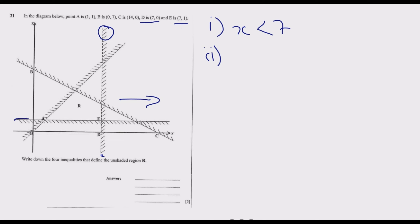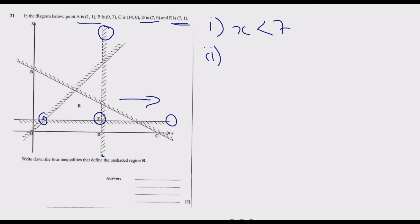The second inequality comes from the horizontal line through A and E. At A, Y is 1 and X is 1; at E, X is 7 but Y is still 1. This line through A and E is a solid line, so points along it are part of the solution. We want everything above, so the second inequality is y ≥ 1.